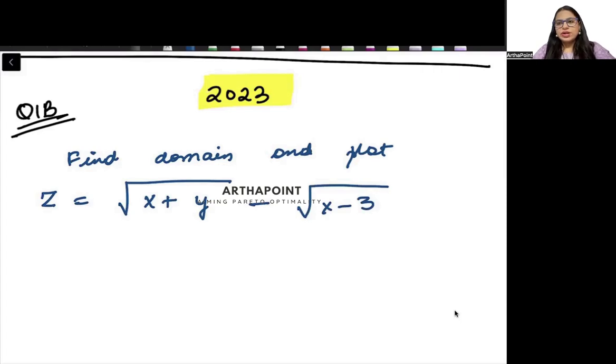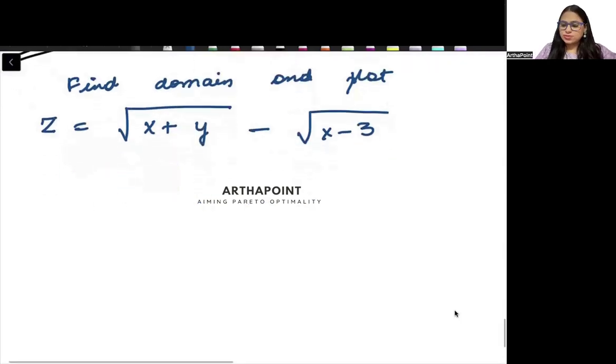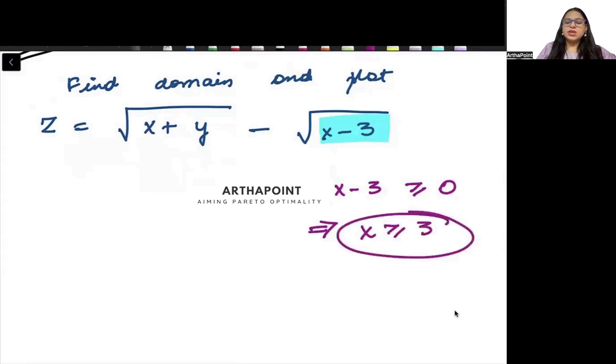Let us try to go ahead and look into this question. Anything that comes under root has to be strictly positive. I know that x minus 3 has to be non-negative. So x minus 3 has to be greater than or equal to 0. So here we have x greater than or equal to 3. Similarly, we require that x plus y should be greater than or equal to 0.